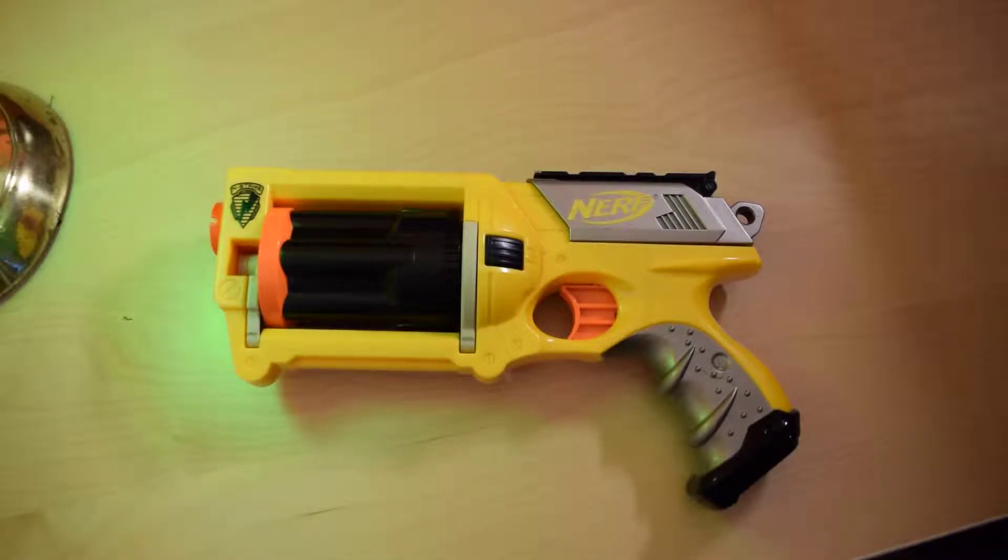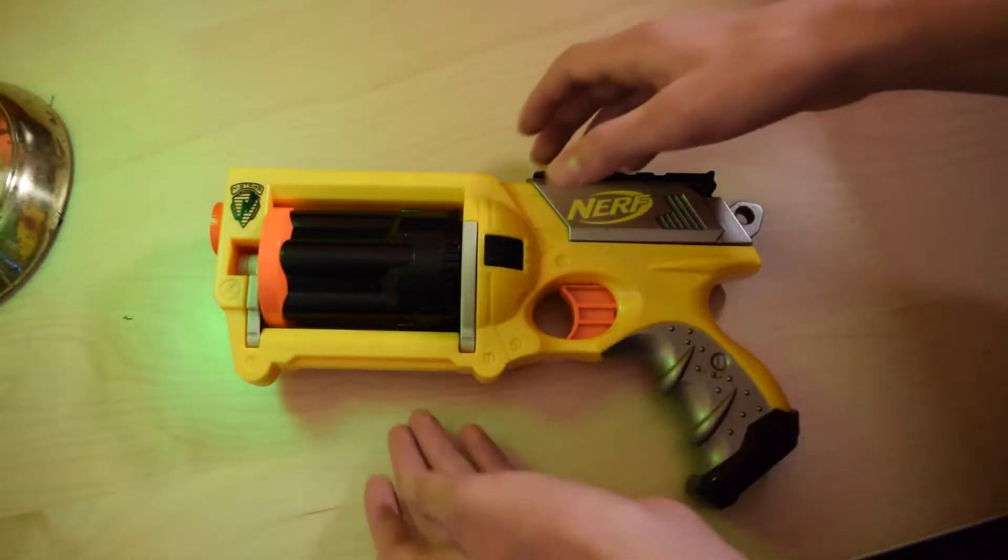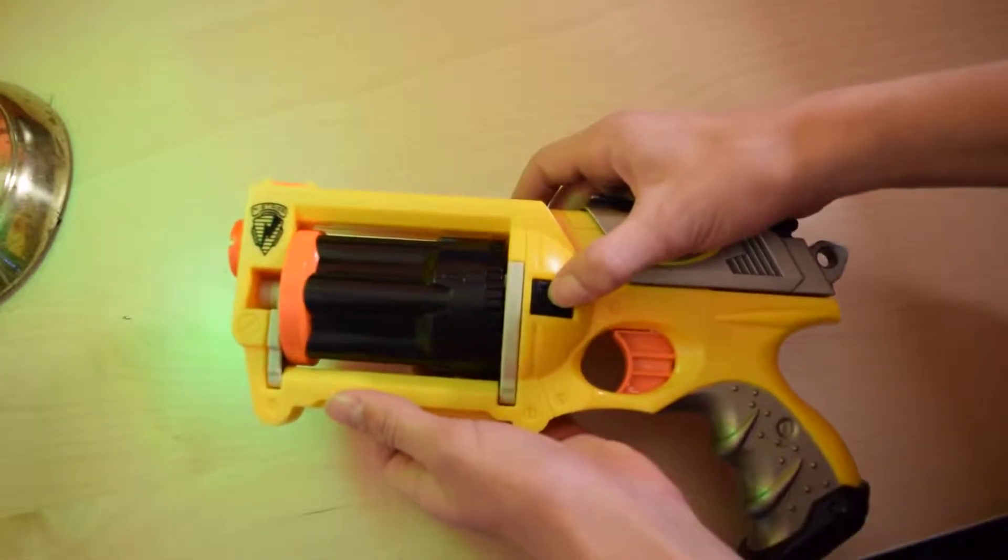This video is targeted towards beginning modders. If you are new to the hobby, you may not know what the Maverick is. It's a 2005 blaster released under the N-Strike line. It's essentially a strong arm, just with worse ranges because it has a primitive plunger system.